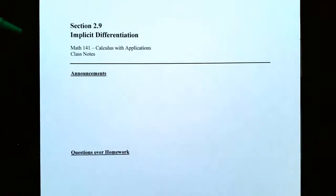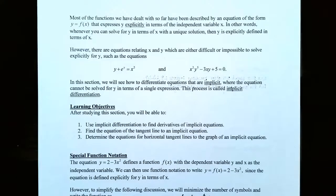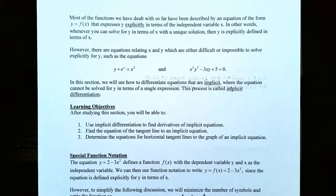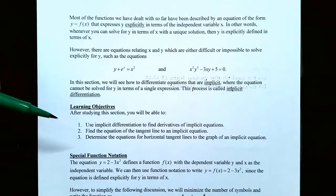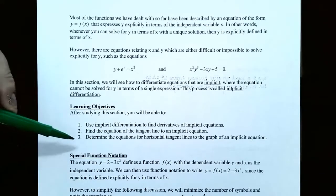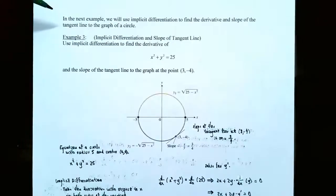Hi everyone, it's Professor Permanent. In this video we're going to talk about implicit differentiation and finding the slope of a tangent line. In the previous video, we talked about implicit differentiation, which involved taking the derivative of both sides of an implicit equation — an equation where you can't easily, or maybe it's impossible, to solve for y. You take the derivative of both sides with respect to x and then solve for y prime. In this video, we're going to talk about finding the equation of a tangent line to an implicit equation using implicit differentiation, and also how to determine equations for horizontal tangent lines. So let's pick up where we left off.